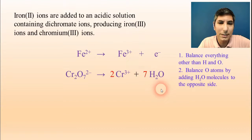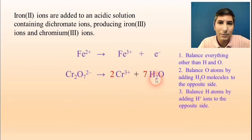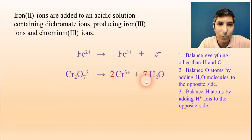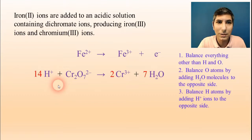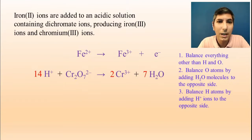The third step is to take care of the hydrogens, because I just solved my oxygens but now I've created a hydrogen problem. I balance the hydrogen atoms by adding the appropriate number of hydrogen ions to the other side of the arrow. In this case I add 14 — since 7 times 2 is 14 — so I add 14 H+ ions to the left side. This works because it's an acidic solution, so hydrogen ions are present in the solution and must be participating.